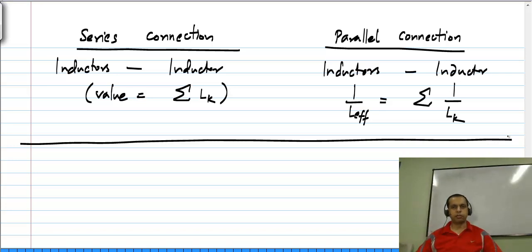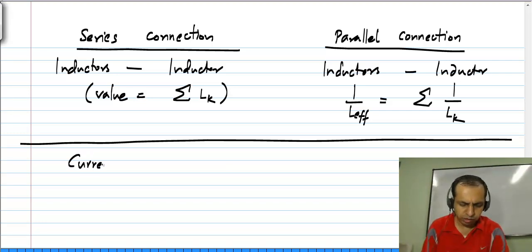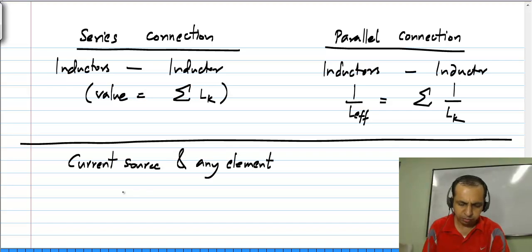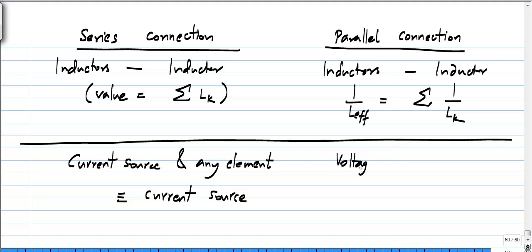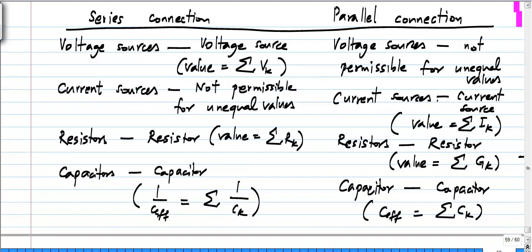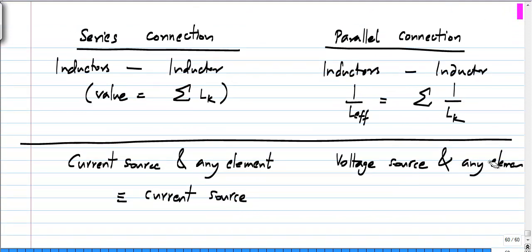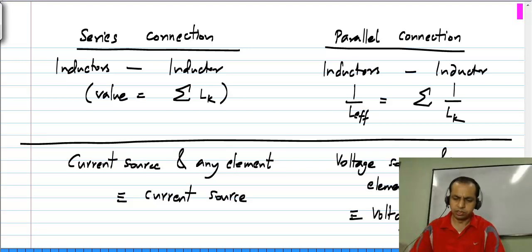All of this refers to connecting like elements in series or parallel. If you have dissimilar elements in general, you have to work out the characteristics, but we looked at two special cases: a series connection of a current source and any element is the current source itself, and a parallel connection of a voltage source and any element is the voltage source itself. That is the summary of what happens with series and parallel connections of elements.